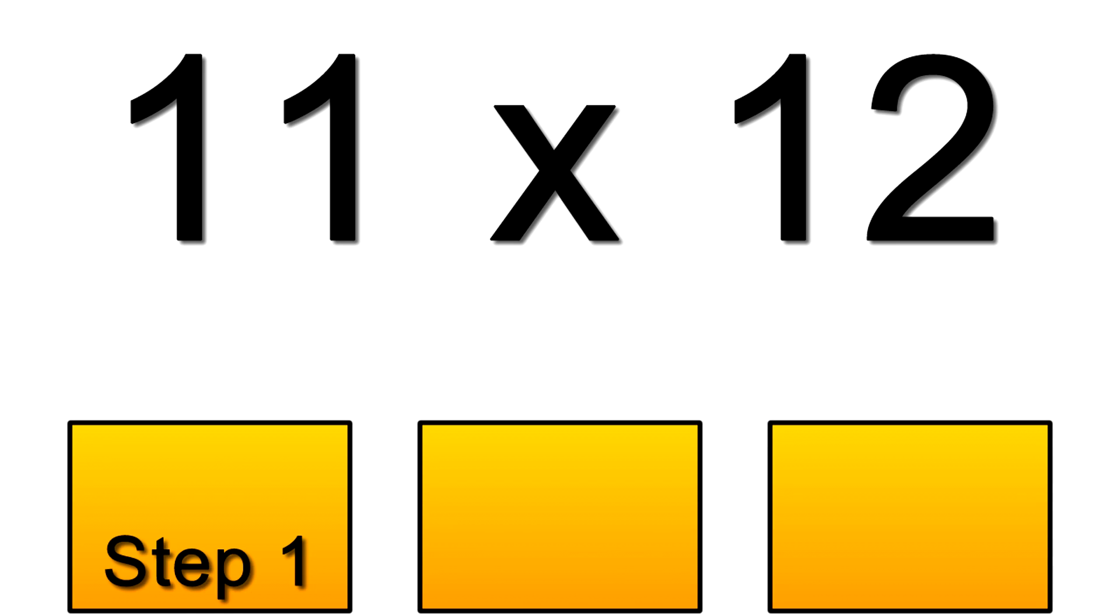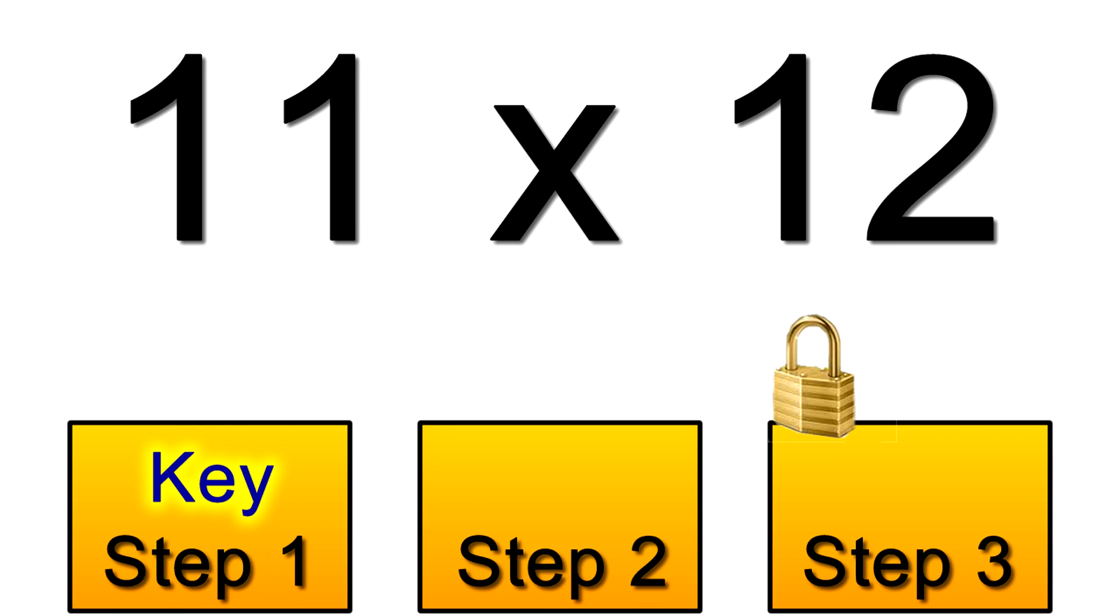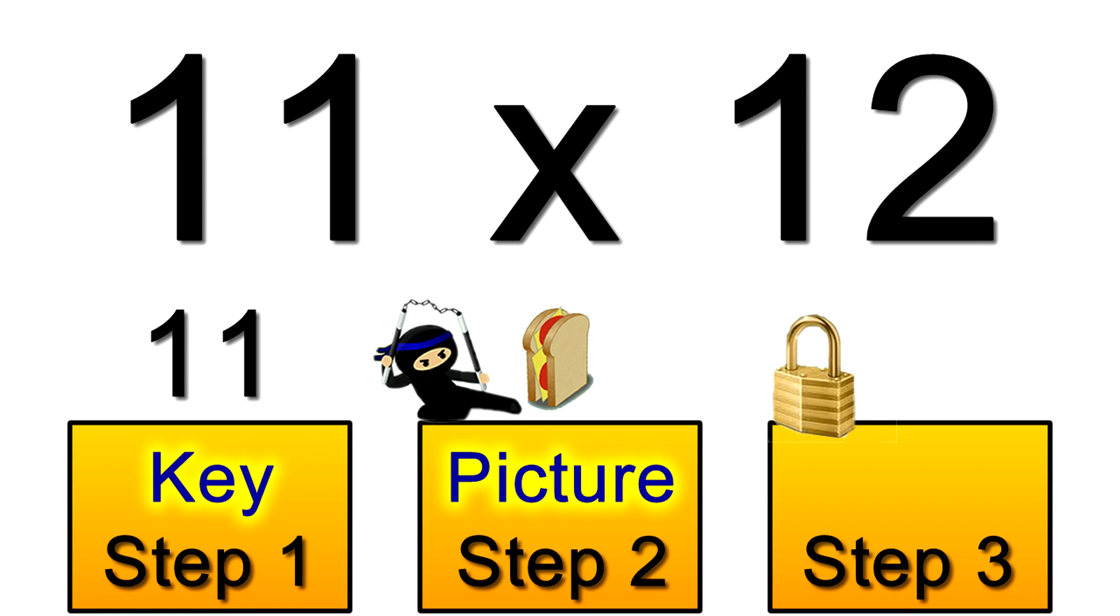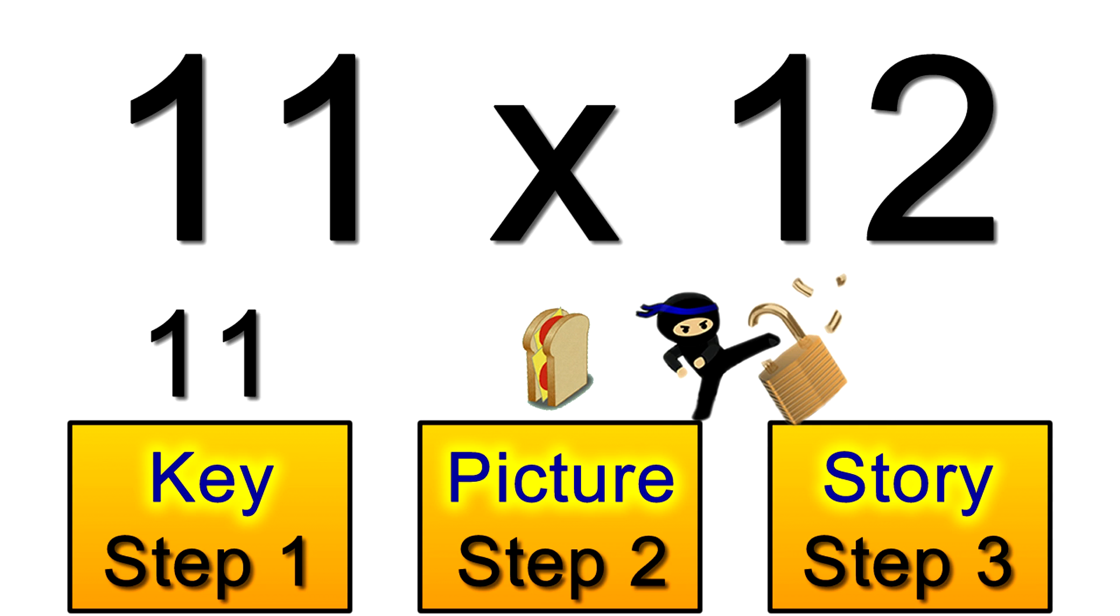For another example let's try 11 times 12. You'll learn that 11 is the fastest key here as the 11 story is quicker than the 12 story. The picture for the 11s is the sandwich. Do you see how that sandwich looks like an 11? Like I said there's always an easy link like that.